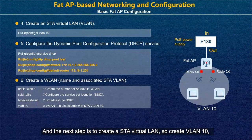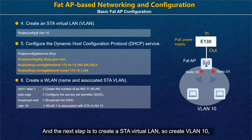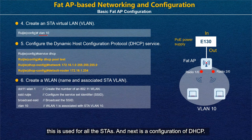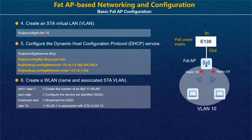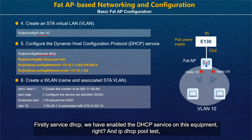The next step is to create an STA virtual LAN. Create VLAN 10, which is used for all the STAs. Then configure DHCP: use 'service DHCP' to enable the DHCP service on the equipment.